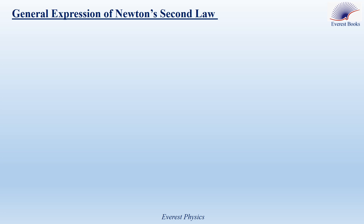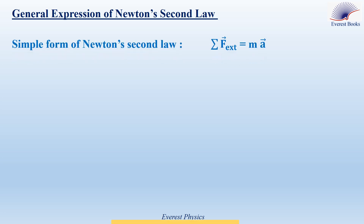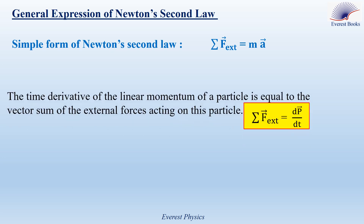General expression of Newton's second law. First, let me remind you of the simple form of Newton's second law: sigma F external equals ma. The net force acting on the system is equal to the mass of the system multiplied by the acceleration. Now, let's move to the general expression of Newton's second law. The time derivative of the linear momentum of a particle is equal to the vector sum of the external forces acting on this particle. So the net force acting on the particle is equal to the first derivative of its linear momentum with respect to time.